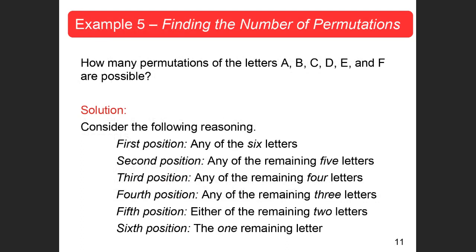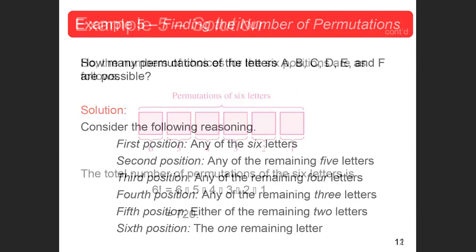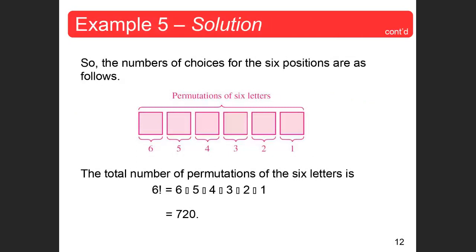How many permutations of the letters A, B, C, D, E, and F are possible? We have six positions. Any of the six letters could go in the first spot, then five letters remain for the second, then four, then three, then two, then one. Multiplying all together gives the permutations — 6 times 5 times 4 times 3 times 2 times 1 equals 720. The number of permutations is simply n factorial.